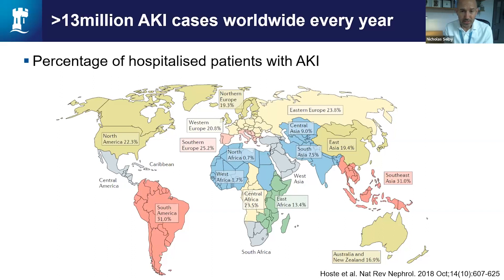Across both low, middle, and high income countries, the rates of AKI in hospitalised patients are consistently very high — at least 10 to 20% of hospital admissions.